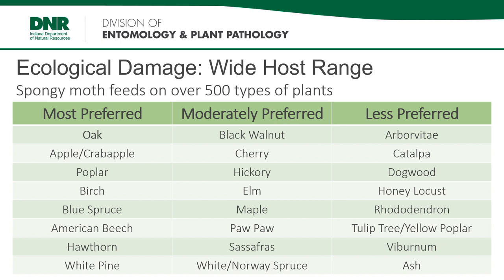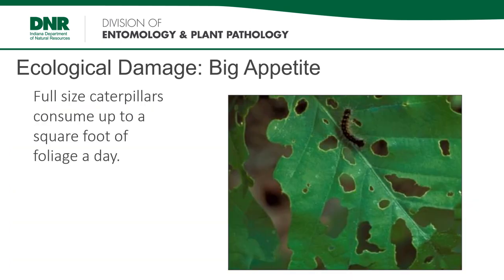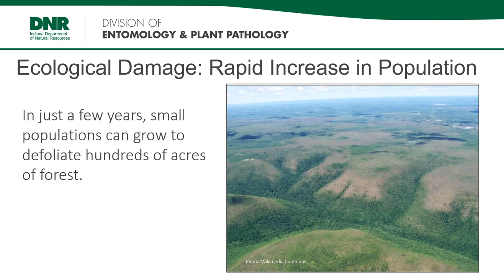Another reason why Spongy Moth is so devastating is because it will feed on over 500 different species of plants. While it strongly prefers oaks, it is a generalist and will feed on a wide range of plants found throughout Indiana. If it can't find an oak or other preferred host, it will find something to feed on. Spongy Moth caterpillars are voracious feeders — at maturity, a single caterpillar can eat one square foot of foliage every 24 hours and consume up to 11 square feet of leaf tissue in its lifetime. With over 500 eggs laid by each female, Spongy Moth populations can grow quickly, and when populations are large, defoliation can happen rapidly.